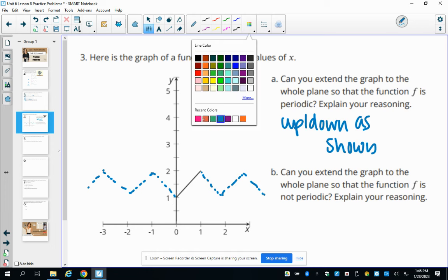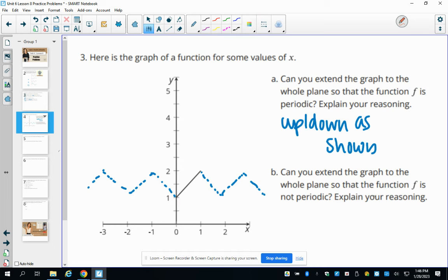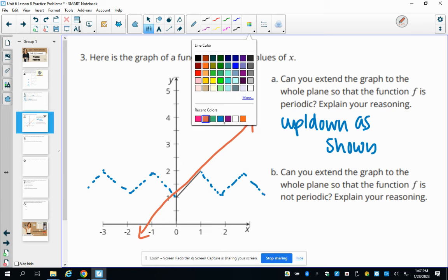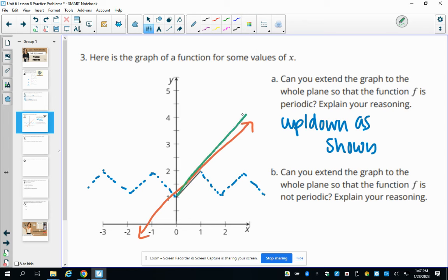Could we extend this graph in the whole plane so that F is not periodic? Explain your reasoning. And yeah, we could just, you know, make it a straight line. So that would not be periodic because it's not going up and down and repeating, oscillating. So that one would be an example of a non-periodic. You could also have it go up on that side. Up on both sides. So kind of like an absolute value function. Neither of those would be periodic because they're not repeating.